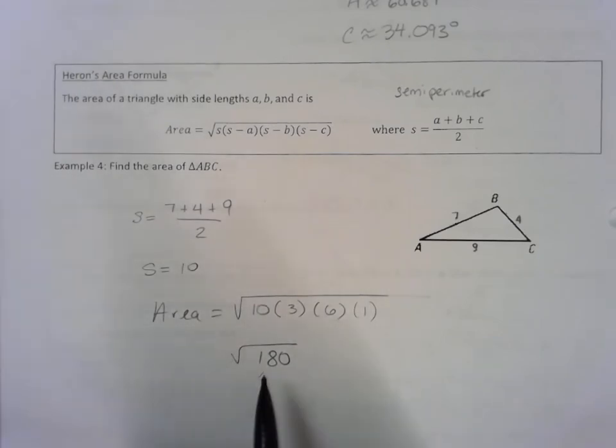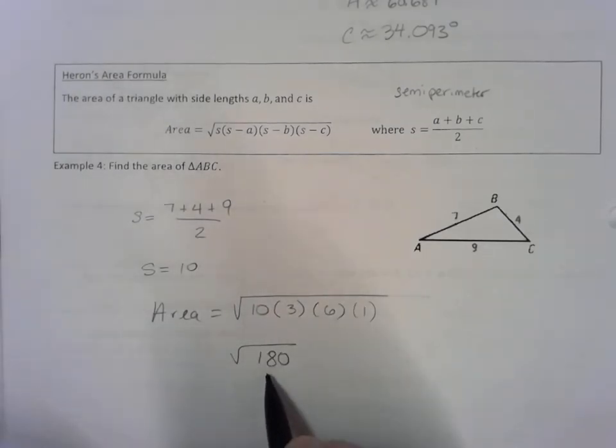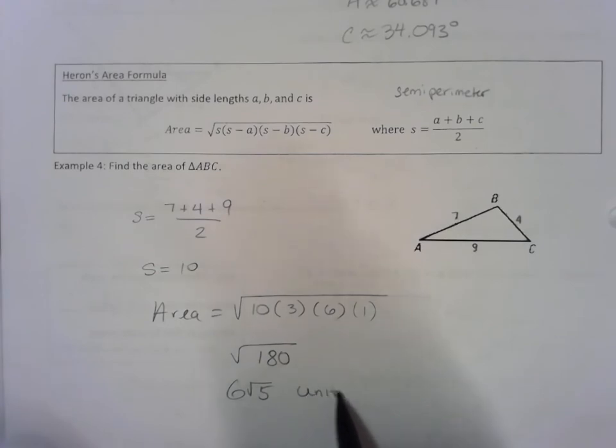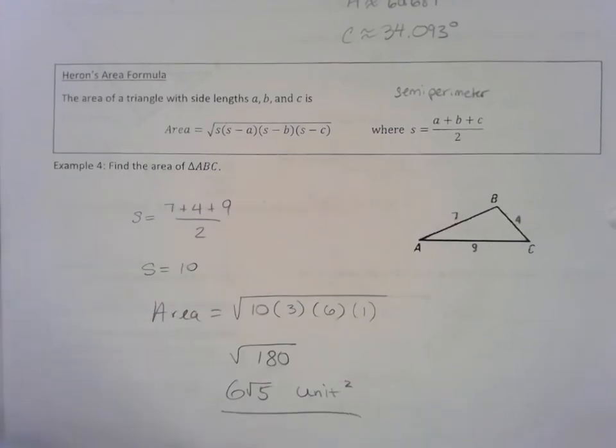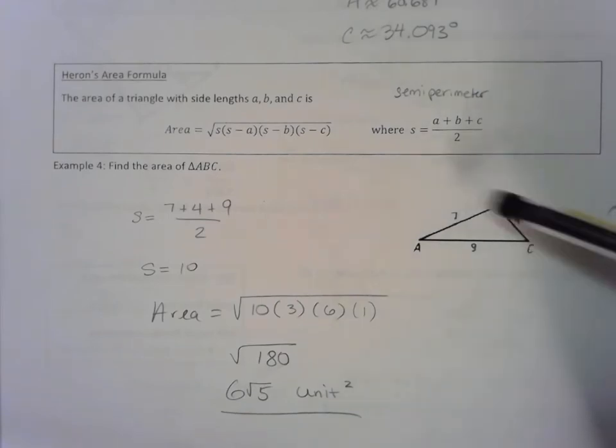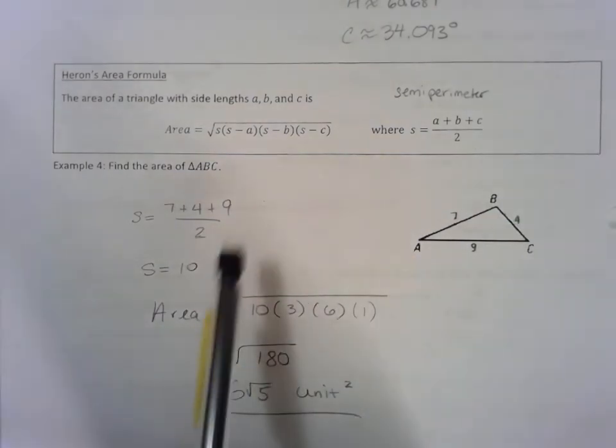Now the square root of 180 contains a perfect square. I believe 36 is the largest perfect square that goes into 180—it goes in 5 times. So this would be 6 root 5. Our units would be in square units because this represents an area. And that's how you would find the area using this formula.